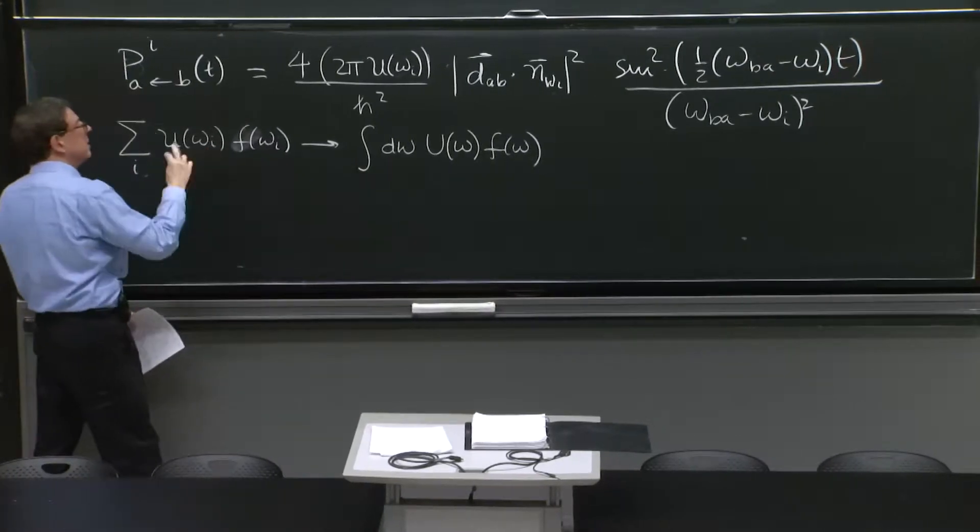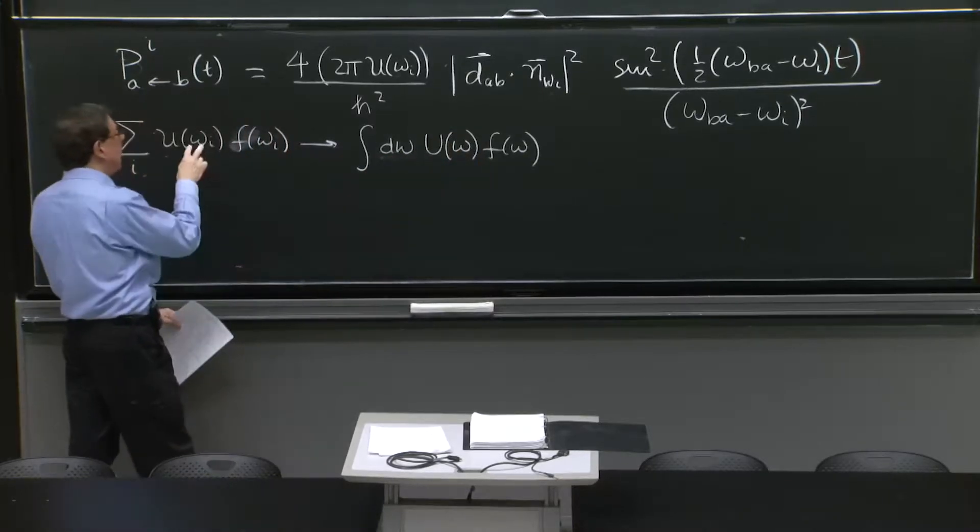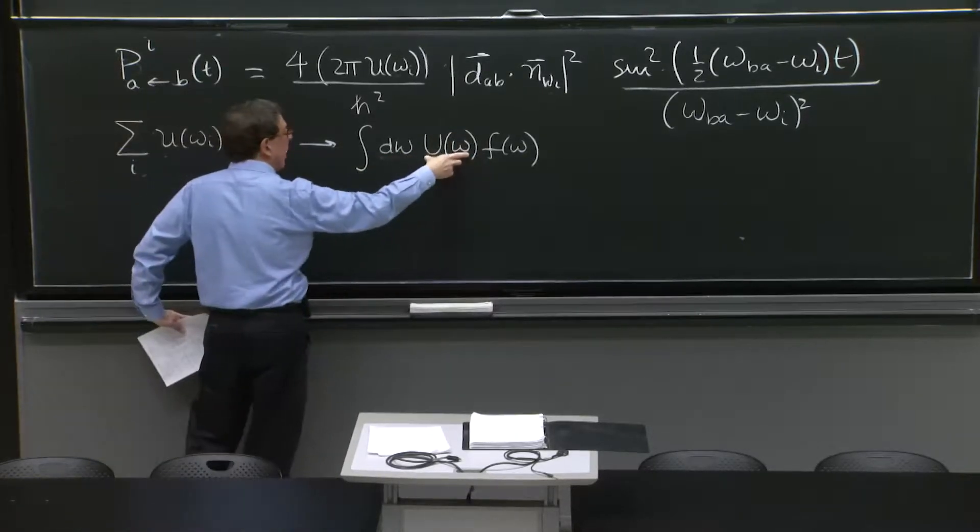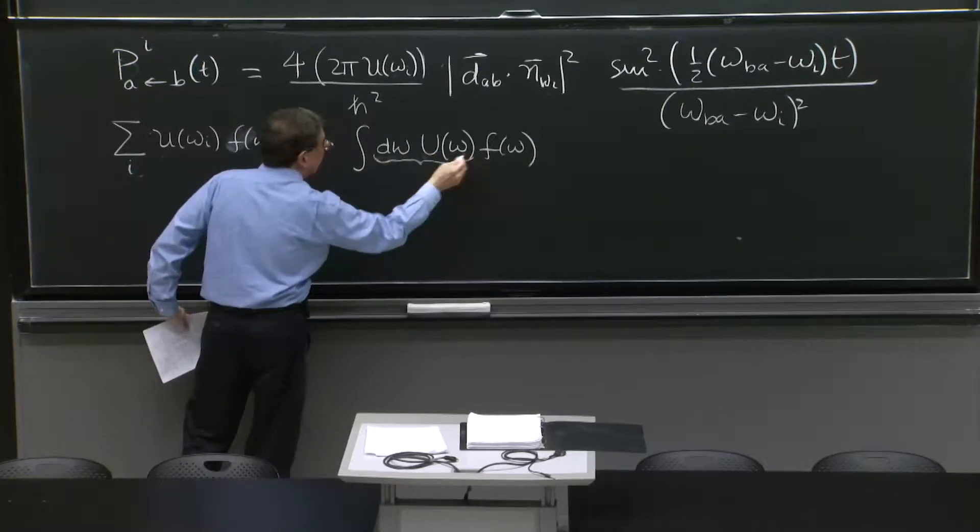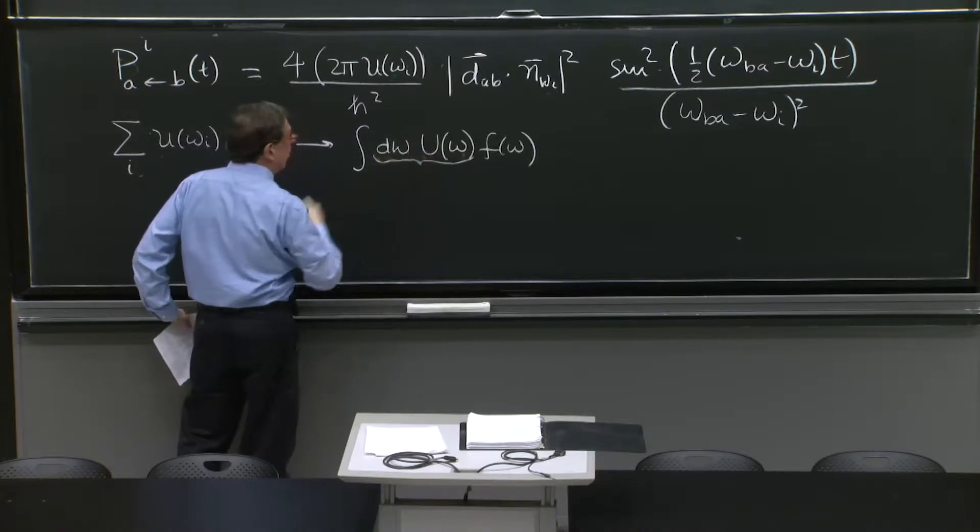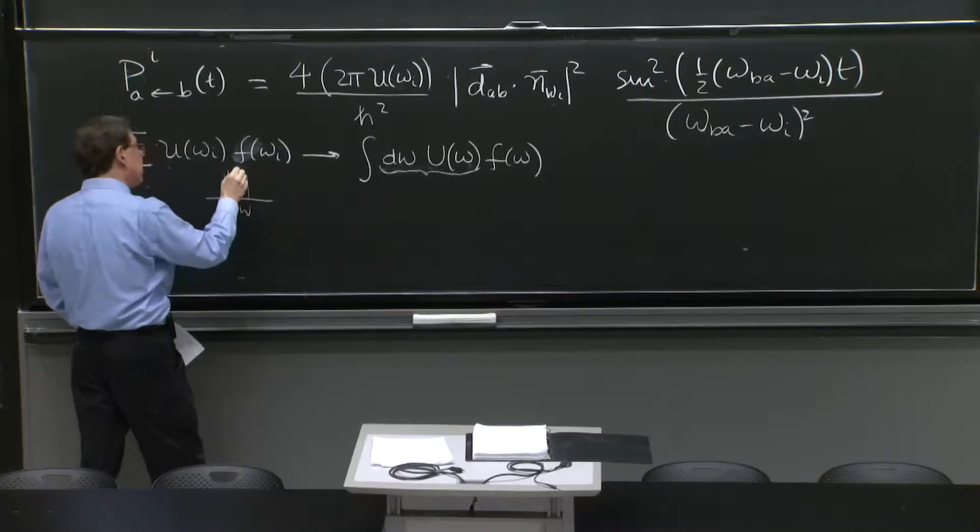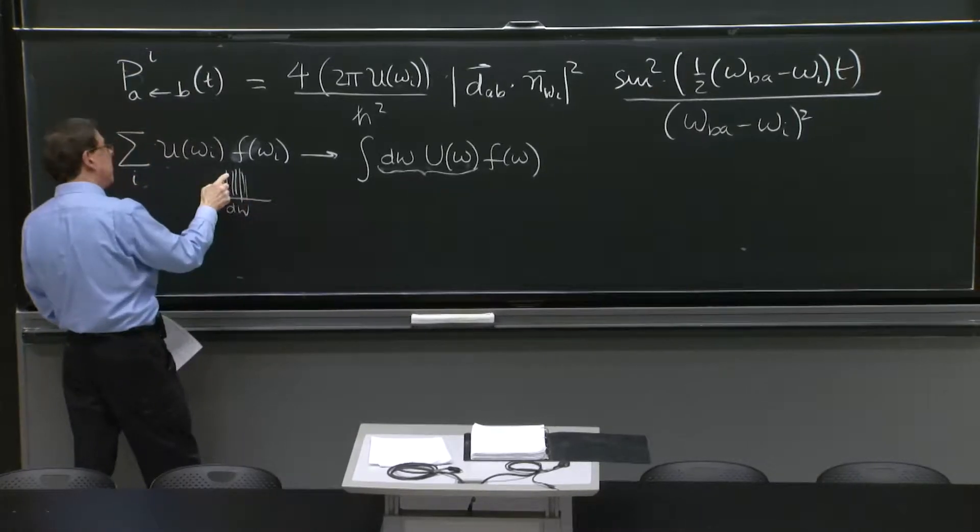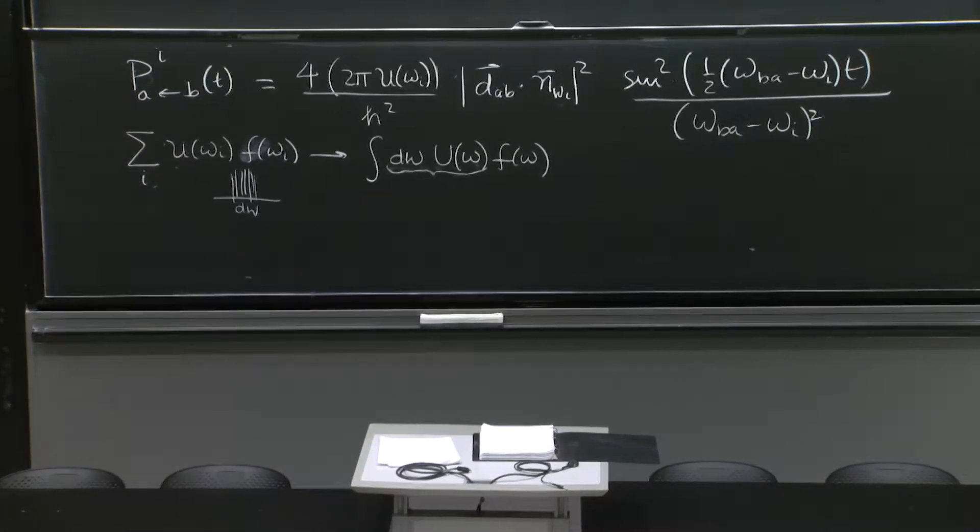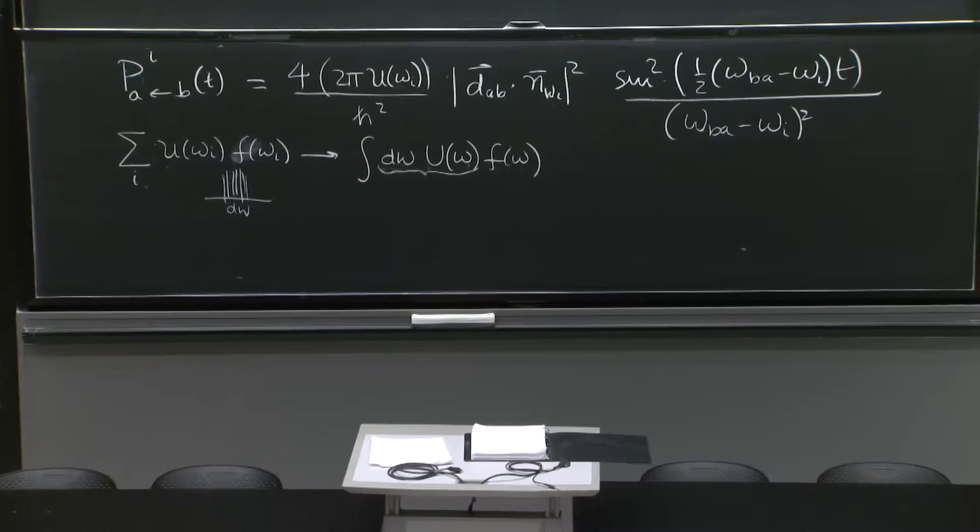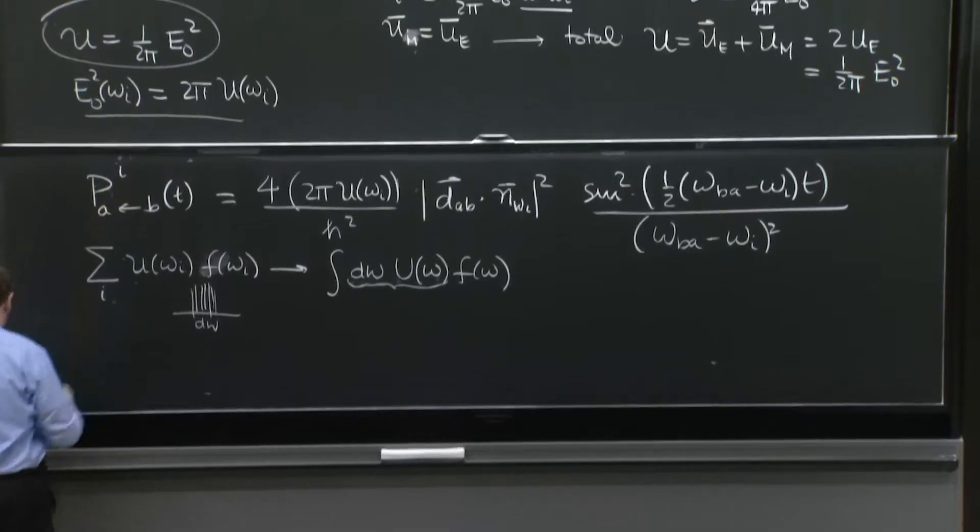So instead of having a sum of these things, you now integrate over a continuous variable. And this represents the energy density in the range d omega. The energy density is the sum of the energy densities of each of the contributions. So that's what we're going to do here to express and to get our transition amplitude.